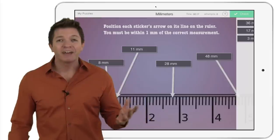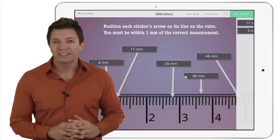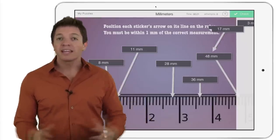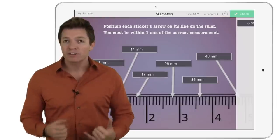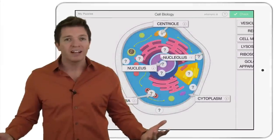And check this out. Stickers can have arrows. These are handy for labeling puzzles, like placing measurements on a ruler or labeling parts of a cell.